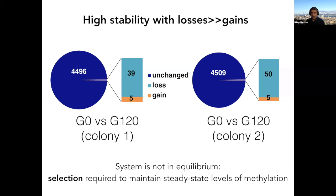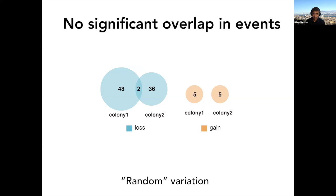We saw 39 loss events in the first colony, 50 in the second, and five gain events. The rate of loss is about 20-fold higher than the rate of gain, meaning the system is not in equilibrium — without natural selection or some other mechanism, you would lose site-specific methylation over time. That's a strong argument that natural selection is required to maintain steady-state methylation levels. The losses and gains appear random, with no more overlap between loss sites than expected by chance.